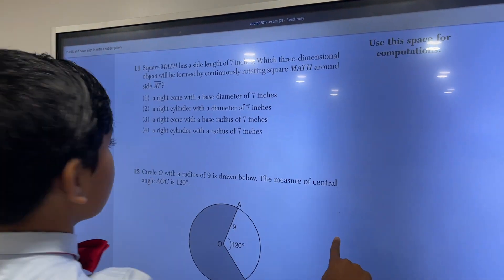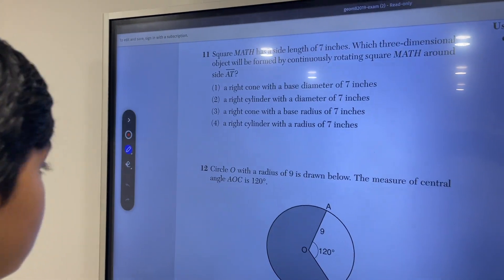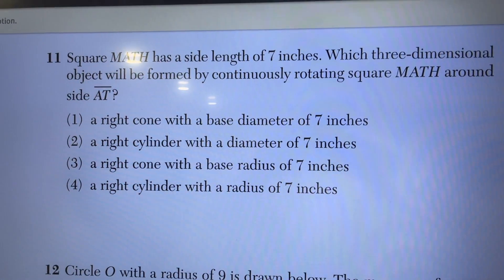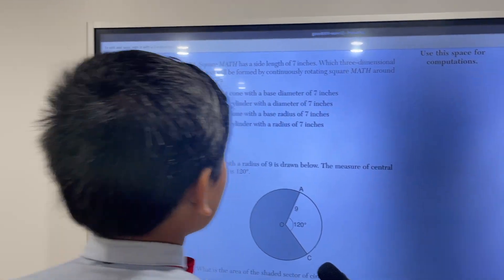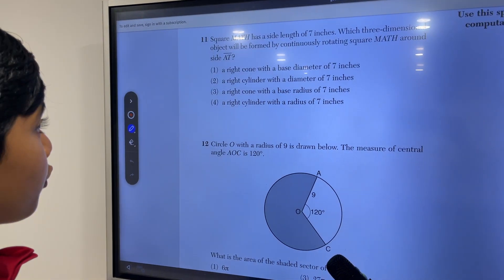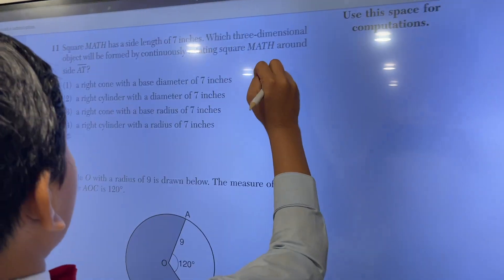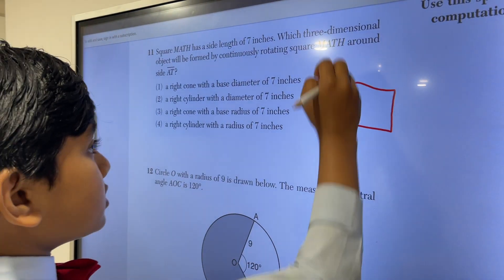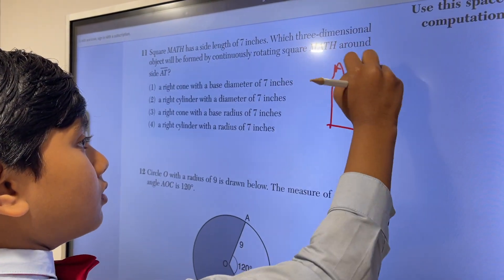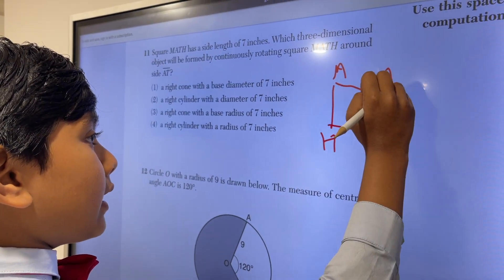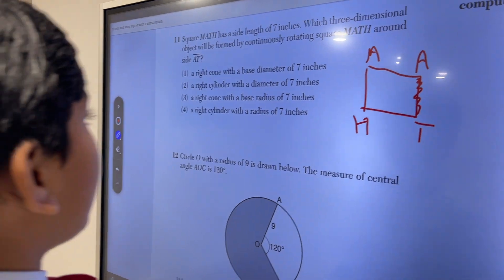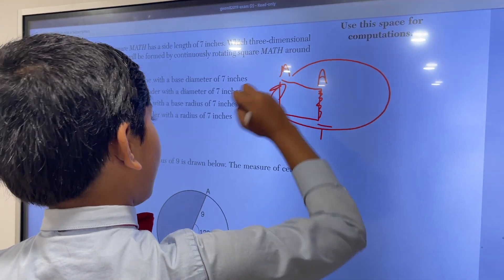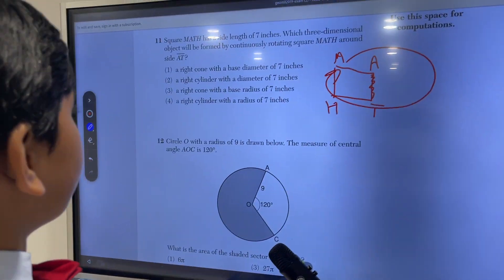Question 11 and 12 respectively. Question 11: Square MATH, I don't know why they chose that, has a side length of 7 inches. What three-dimensional object will be formed by continuously rotating square MATH around side AT? If you're rotating it around this side AT continuously, then you're getting a cylinder with a radius of 7 inches.